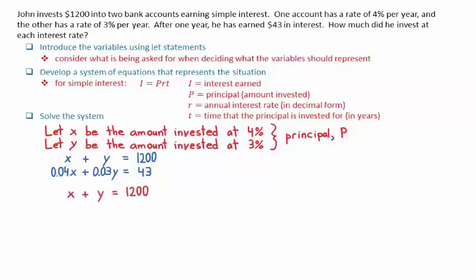I can isolate for y by subtracting x from both sides. This results in y = 1,200 - x. We can then look at the other equation and substitute 1,200 - x in place of y.